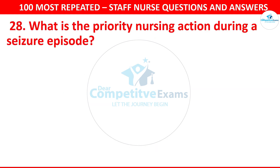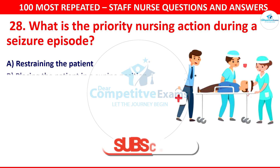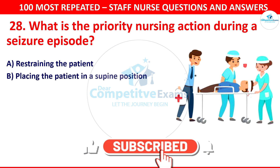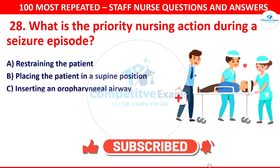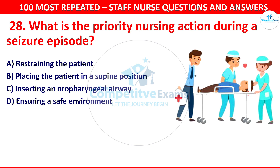Question number 28: What is the priority nursing action during a seizure episode? Your options are: restraining the patient, placing the patient in a supine position, inserting an oropharyngeal airway, or ensuring a safe environment.